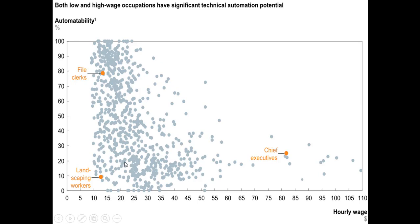An example of a very highly automatable job is a file clerk. If you could design a robot that could look at something and go put that file in the right place — not to mention that things are being digitized anyway and through software you can file stuff very easily in databases. So being a file clerk is a very dangerous job right now because the likelihood that it can be handed off to a machine is pretty high.